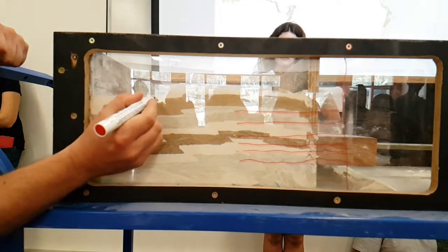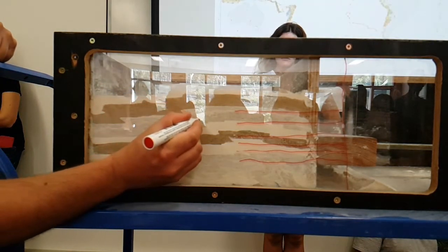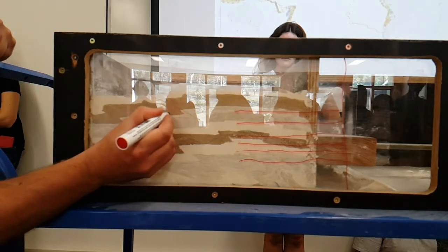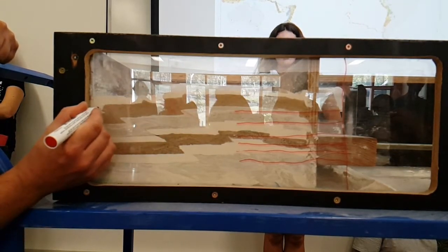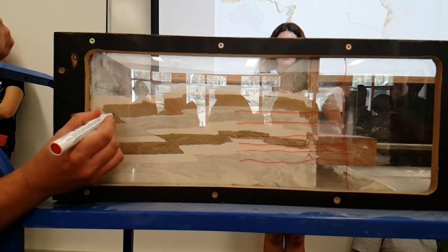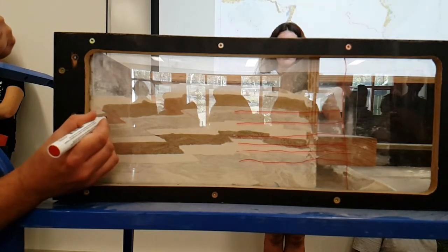This is a fault basically running down in this direction where this side has moved upwards relative to that side. There's another really nice one down here, so this side has moved upwards, this side has moved downwards.